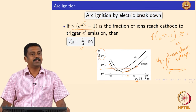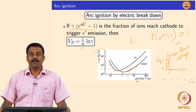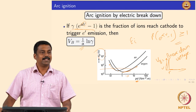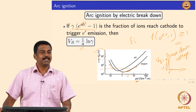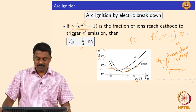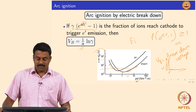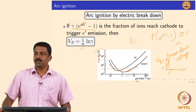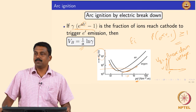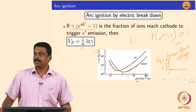VB is also a function of the shielding gas because of ionization energy — if the ionization energy EA is high, the electrons need to gain more energy to ionize, so the breakdown voltage will also change. Under isobaric pressure conditions, the main factors determining the breakdown voltage are the shielding gas and the distance between cathode and anode.